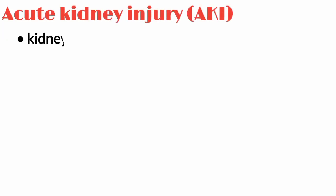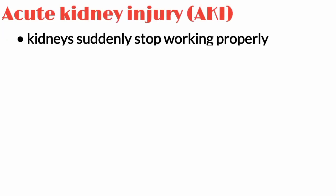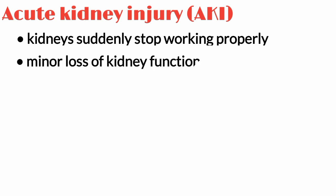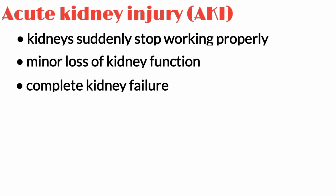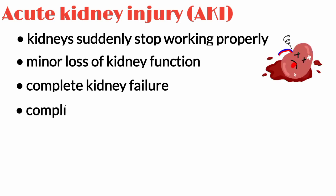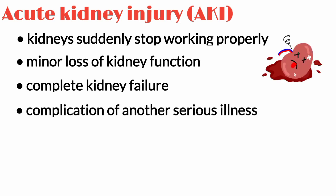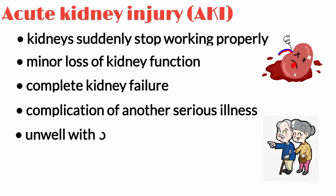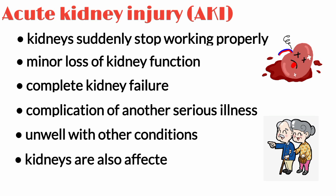Acute kidney injury, or AKI, is where your kidneys suddenly stop working properly. It can range from minor loss of kidney function to complete kidney failure. AKI normally happens as a complication of another serious illness. This type of kidney damage is usually seen in older people who are unwell with other conditions, and the kidneys are also affected.